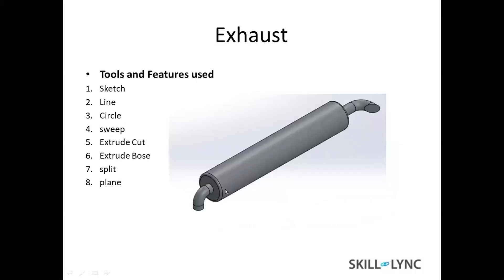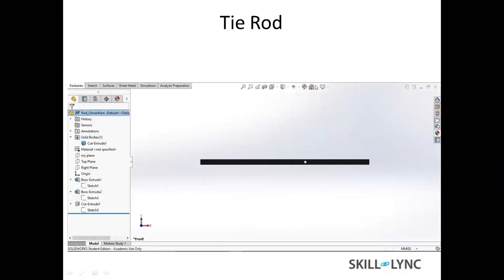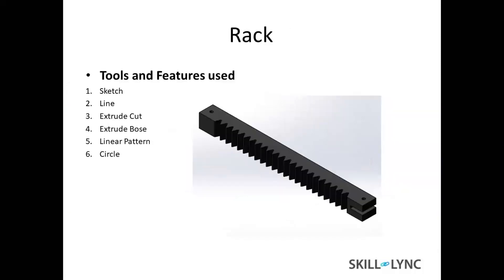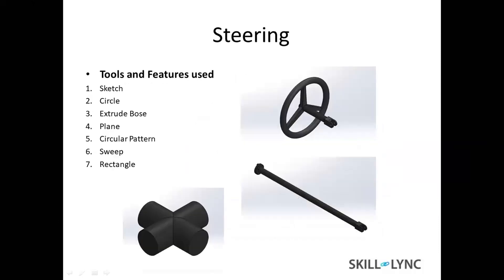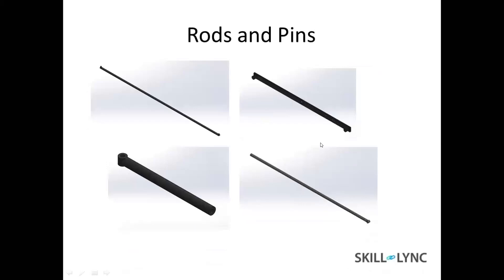This is the exhaust of the truck to remove the burned gases. This is a tie rod for the steering mechanism, and this is a rack gear for the steering mechanism — I am using a linear pattern and extrude boss. This is the pinion gear which will fit on the rack gear for steering. This is the steering wheel, and this is a representation of the universal joint — it will connect here and spin at an angle. These are the rods and pins used to make the steering mechanism.